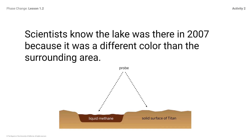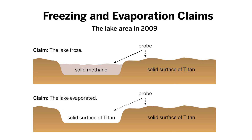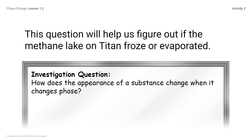Scientists know the lake was there in 2007 because it was a different color than the surrounding area. Scientists at the Universal Space Agency have developed two claims about what could have happened to the lake: the lake froze, or the lake evaporated. The diagrams of these claims show what might have happened in each case. In this unit, you will use your understanding of chemistry to explain what happened. Both claims are examples of phase changes — the methane in the lake either evaporated or froze. This question will help us figure out which occurred.